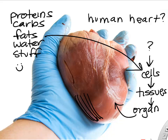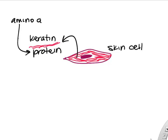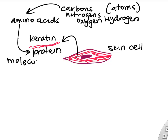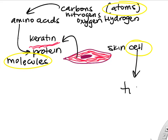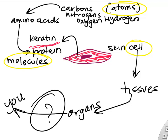If you look at a skin cell, you might find a specific protein called keratin — you've probably heard of that in your hair and nails, and it's also in your skin cells. Proteins are made of amino acids, and amino acids are made of atoms like carbon, oxygen, nitrogen, and hydrogen. So: atoms make molecules, molecules build cells, cells build tissues, and tissues build organs.